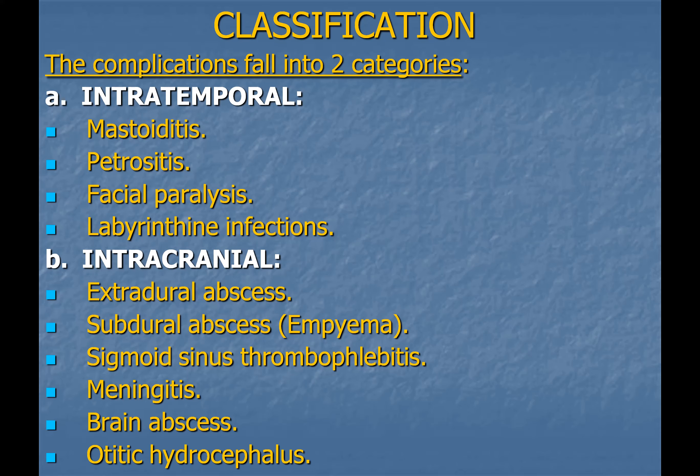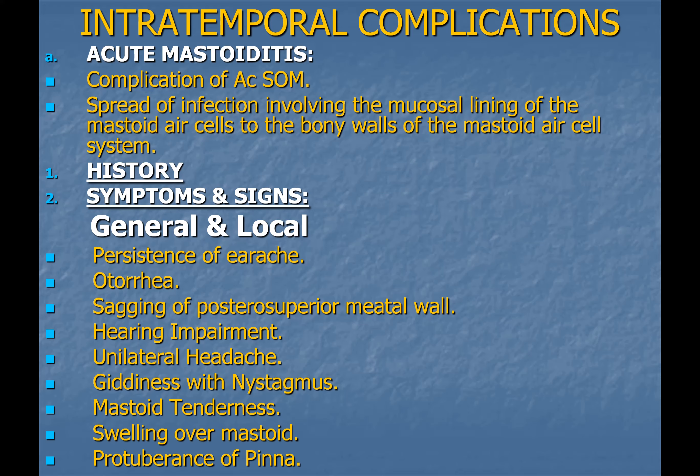Mastoiditis can result from acute otitis media or chronic suppurative otitis media. When infection spreads beyond the mucosa and involves the underlying bone of the mastoid air cell system, the patient develops mastoiditis. The patient presents with pain behind the ear, fever, and ear discharge.